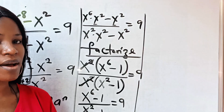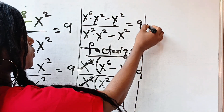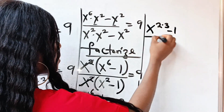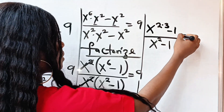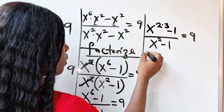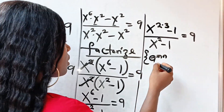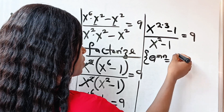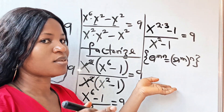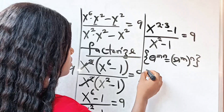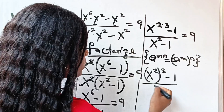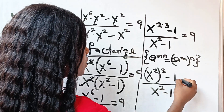6 is the same thing as 2 multiplied by 3. So we can write x to the power of 6 as x to the power of 2 multiplied by 3, minus 1, divided by x to the power of 2 minus 1, is equal to 9. Recall that a to the power of m times n is equal to a to the power of m, raised to the power of n. So we can write this as x to the power of 2, raised to the power of 3, minus 1, divided by x raised to the power of 2, minus 1, equals 9.